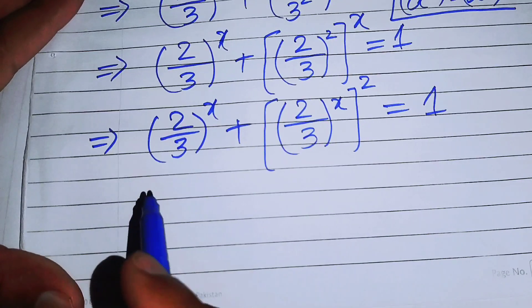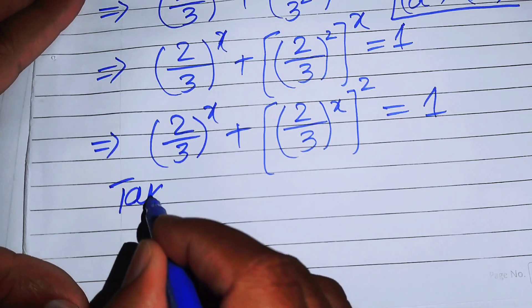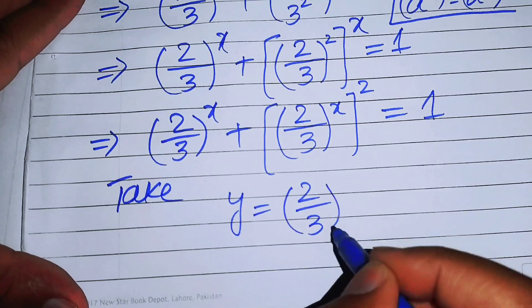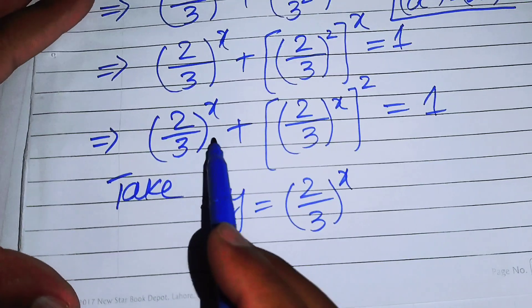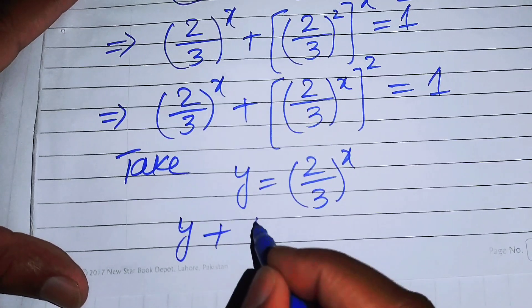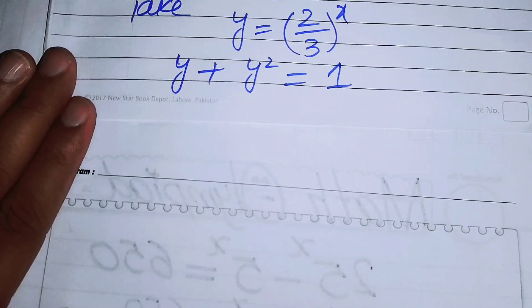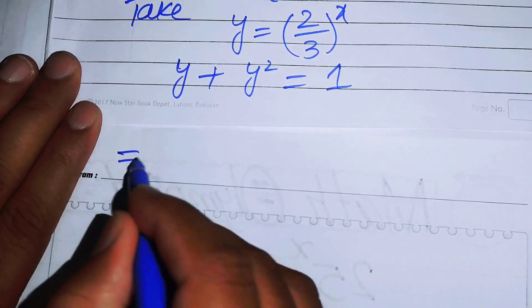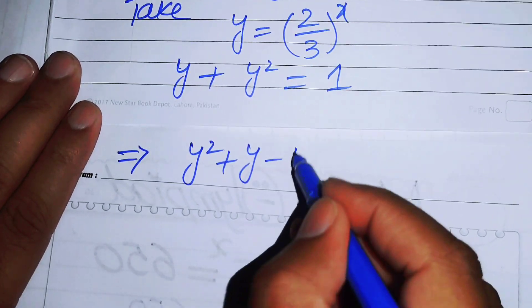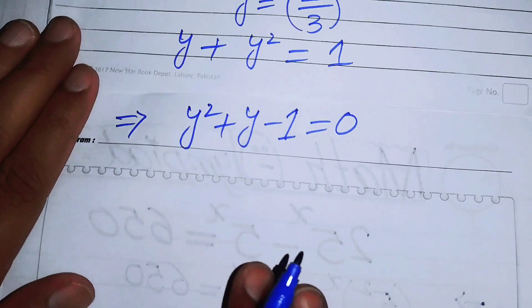We will rearrange this to convert the exponential equation into quadratic form. We let y equal (2/3) to the power of x, so this expression becomes y plus y squared equals 1. Rearranging gives y squared plus y minus 1 equals 0.